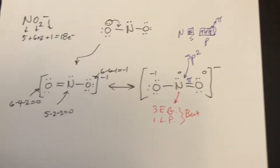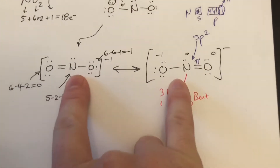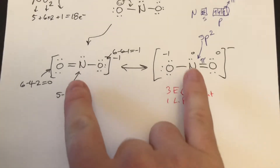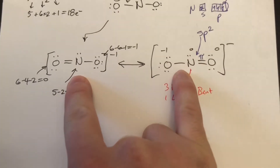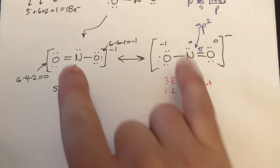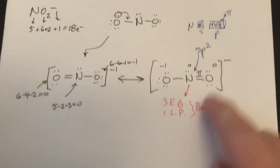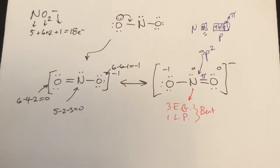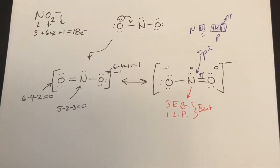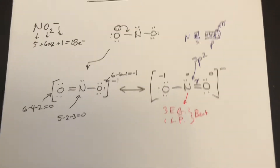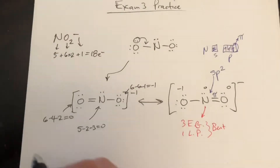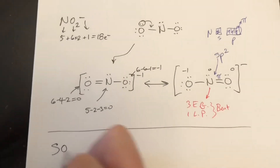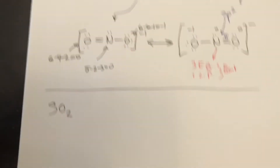So we have the Lewis structures, the resonance structures for those, the geometry, and the hybridization. Now let's try a slight variation — let's try SO₂.